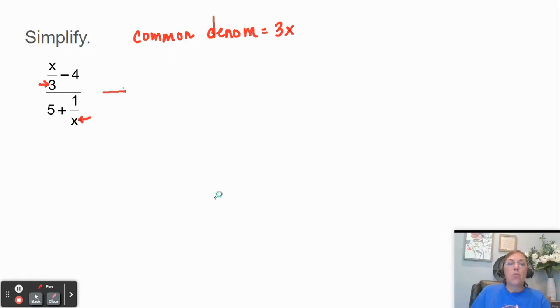Now, what we're going to do is we're going to take the problem and I'm going to multiply each term in the problem by 3x. So I'm going to multiply this by 3x. I'm going to multiply this by 3x. I'll multiply this by 3x and this by 3x.